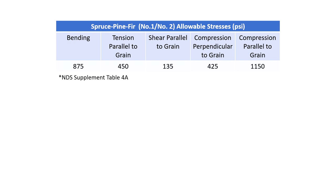Considering these values, what do you note? First of all, notice that the highest value is compression parallel to grain. If we think back to previous discussions, the greatest force a tree trunk must carry is the weight of the tree branches it holds up — thus, this should be expected. Tension parallel to grain is much lower, as a tree trunk will rarely if ever go into complete tension. And look at the value for bending — bending stress is a combination of tension and compression, and the allowable bending stress is somewhere between the tension and compression values. You can actually see how basic mechanics works through the actual allowable values here.